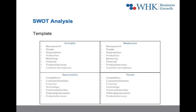Strengths and weaknesses are things that the business has total control of, whereas opportunities and threats are things that the business has no control of, or only a little control of. So you could say: internal versus external — strengths and weaknesses are internal, opportunities and threats are external.